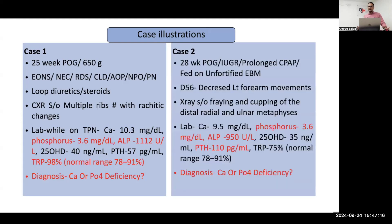Second case: a 28-weeker with IUGR who was on prolonged CPAP. The baby was given unfortified expressed breast milk. On day 56, there was decreased movement of the hand and X-ray was suggestive of rachitic changes. In this case, PTH was high and TRP was low, so a diagnosis of calcium deficiency was made.